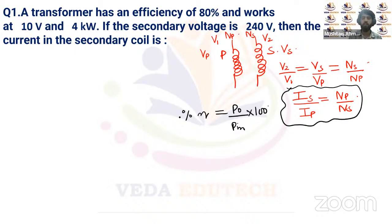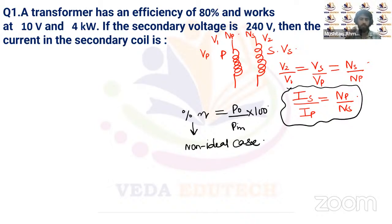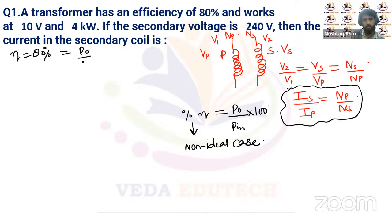Efficiency of the transformer is defined as output power divided by input power multiplied by 100, giving percentage efficiency. In the non-ideal case we always talk about efficiency. For an ideal transformer, input power equals output power. In question one, efficiency is 80%, meaning P_output / P_input = 0.8.